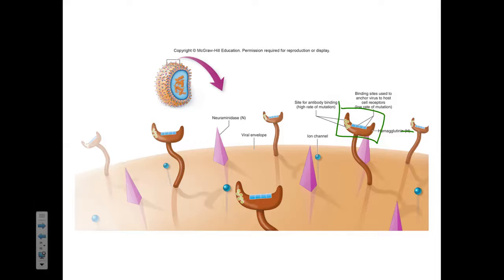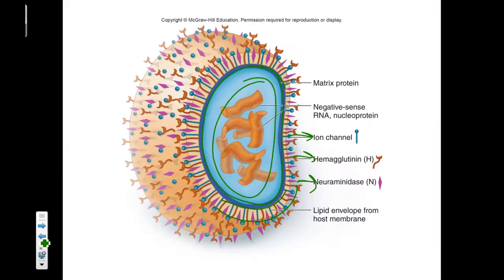The gene that codes for that H marker on the influenza virus mutates very rapidly. And because it mutates very rapidly, our influenza virus is going to have many different strains that our immune system will need to respond and adapt to. One of the main reasons there's so much mutation is that the genetic information is stored as single-stranded negative-sense RNA — the single most unstable, mutation-prone form of nucleic acid information storage.